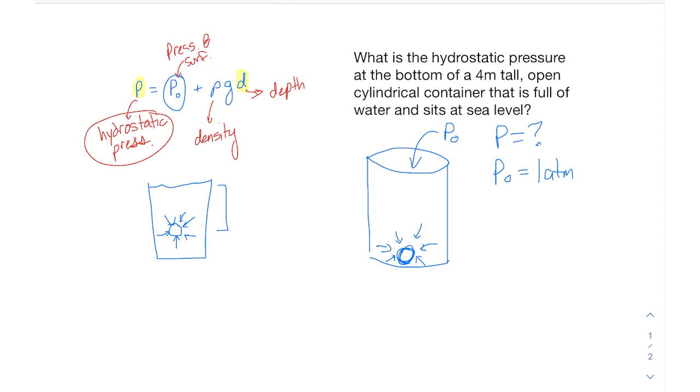And then it says that it's water. So water is going to have a density of 1 gram per cubic centimeter.